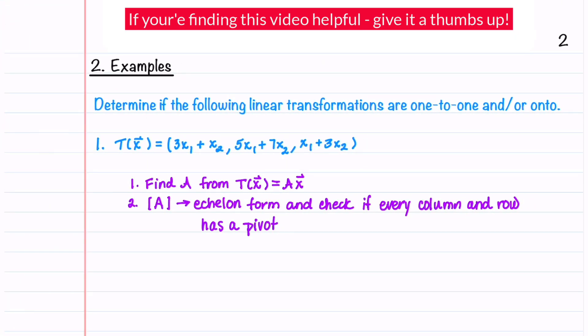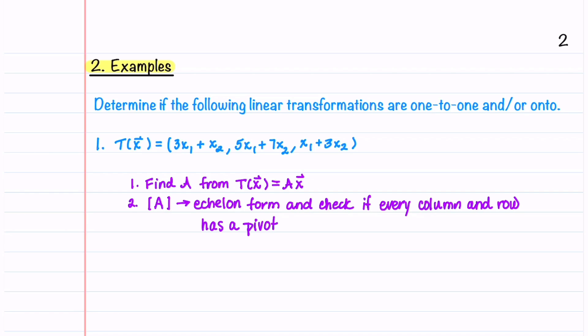Let's now walk through two example problems so that we can see in practice how to determine if a linear transformation is one-to-one and or onto. Let's look at our first example. When determining if a linear transformation is one-to-one or onto, there are two steps that we need to follow. The first step is that we need to find A from our transformation. And the second step is that we need to reduce that matrix A to echelon form and check if every row or column has a pivot.